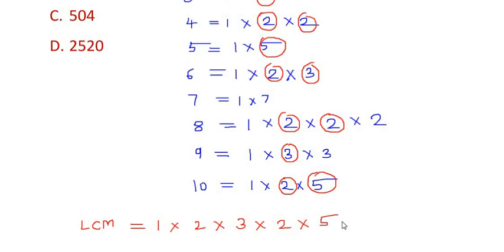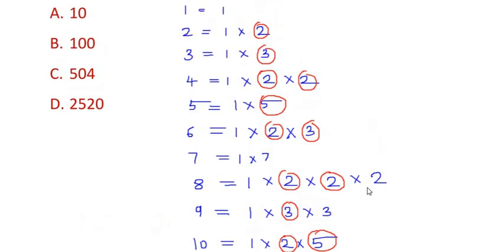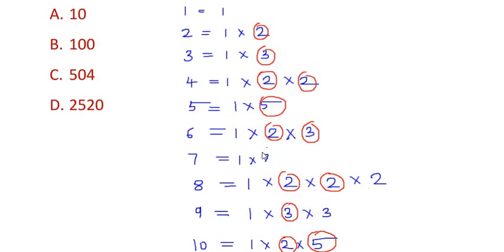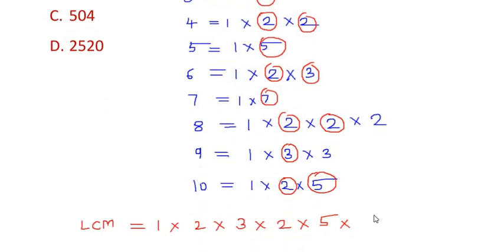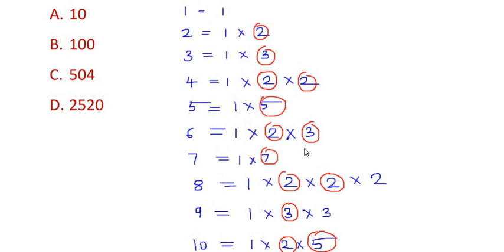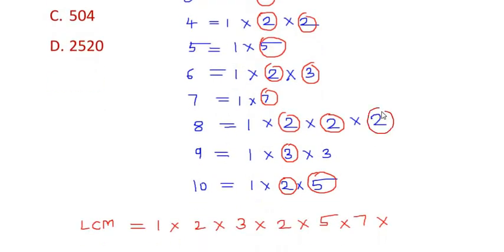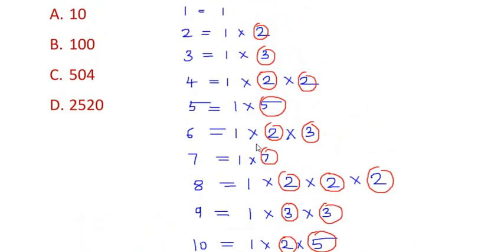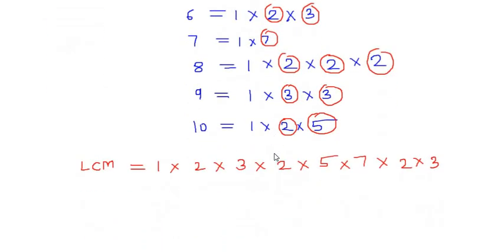Here is left is 5. So 5 from here and 5 from here, so we are writing it only once. And here there is 7 left and we write 7 here. Now the numbers left here is 2 and finally we are left with the number 3. So I hope we have taken all the numbers here.